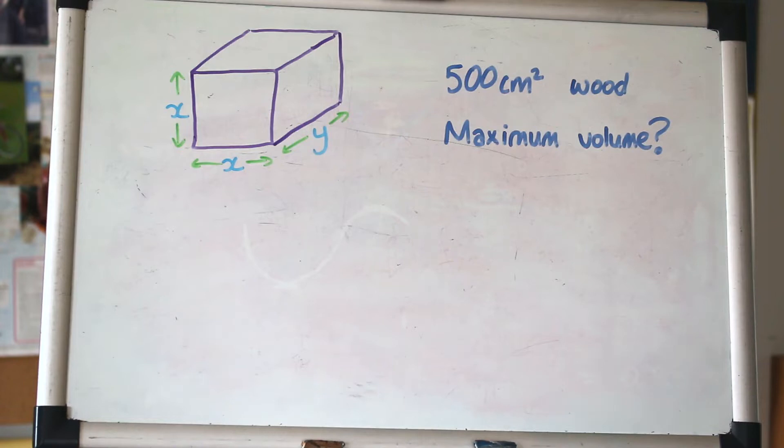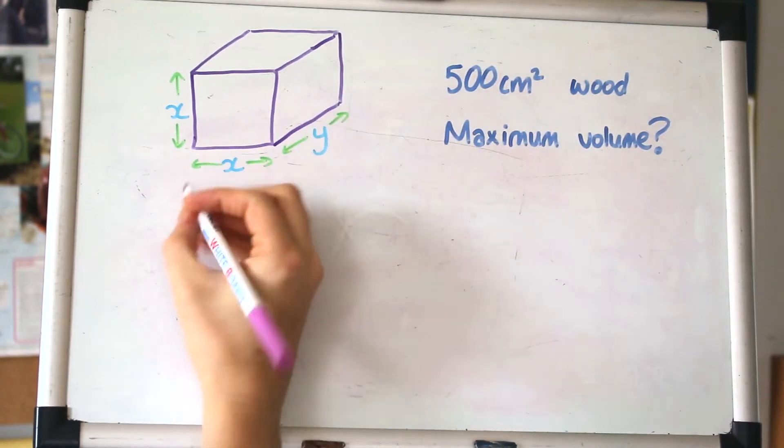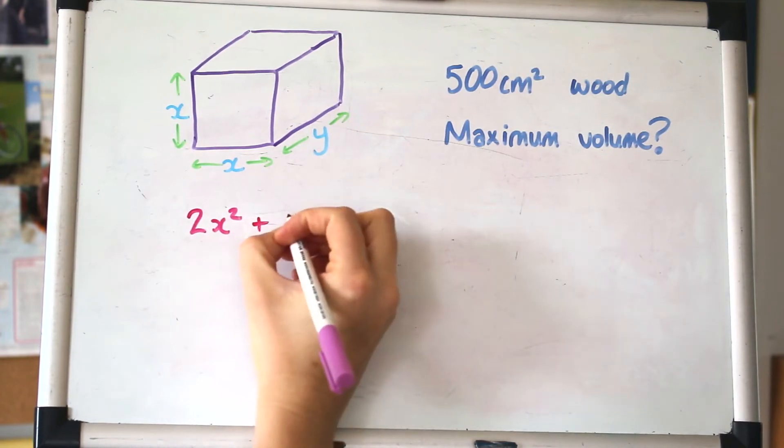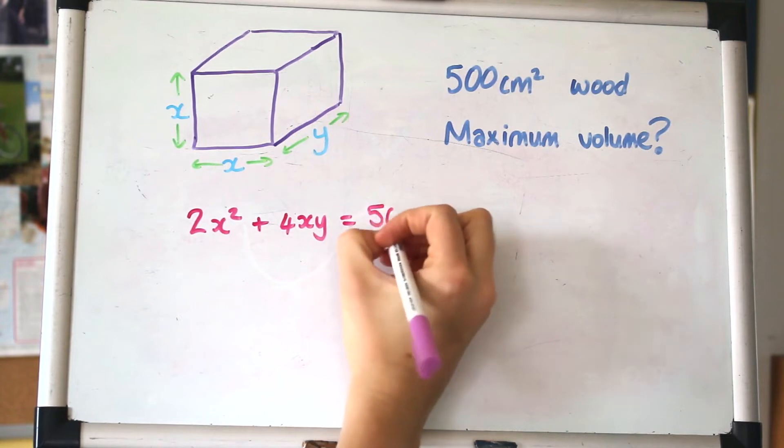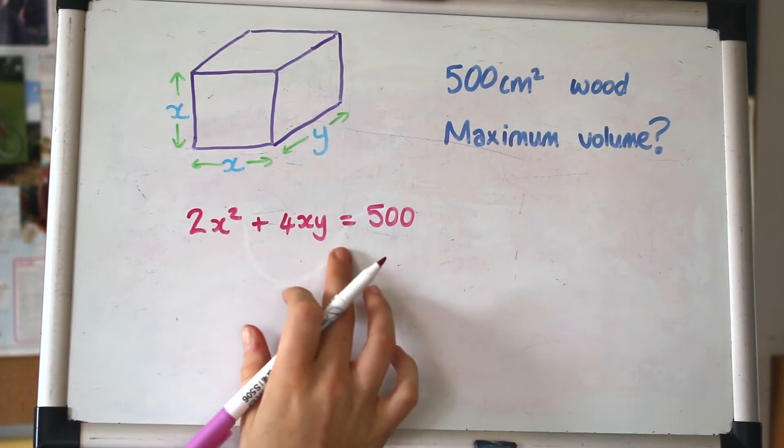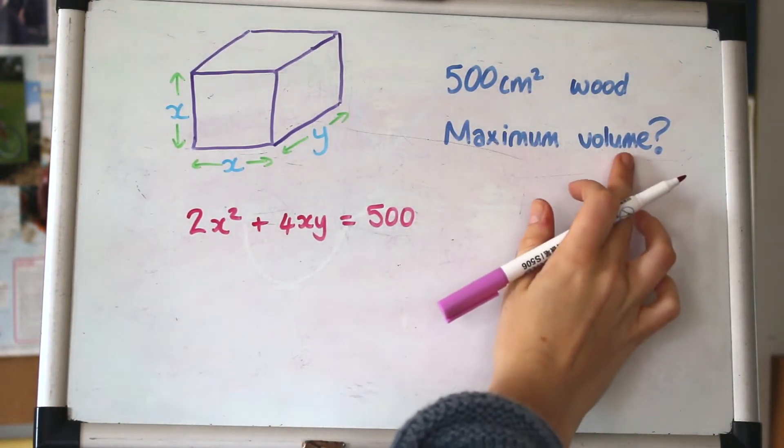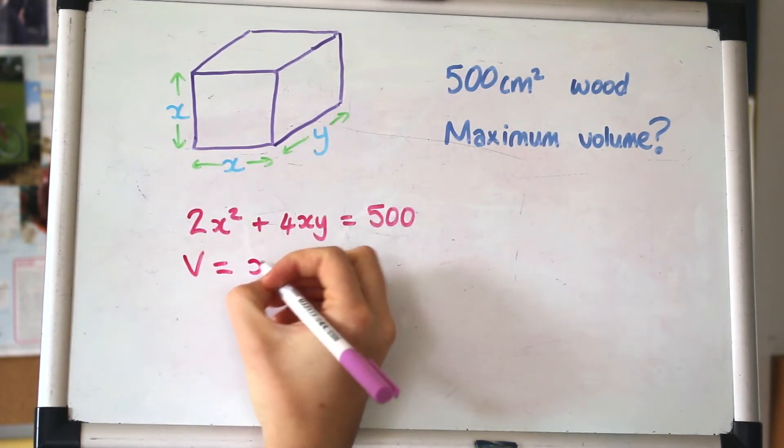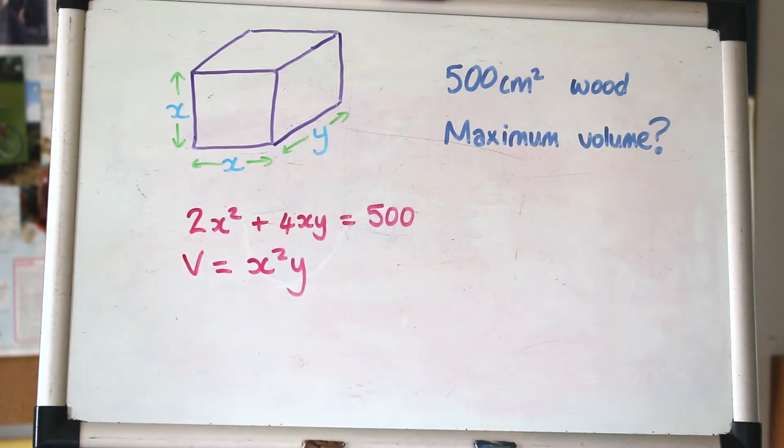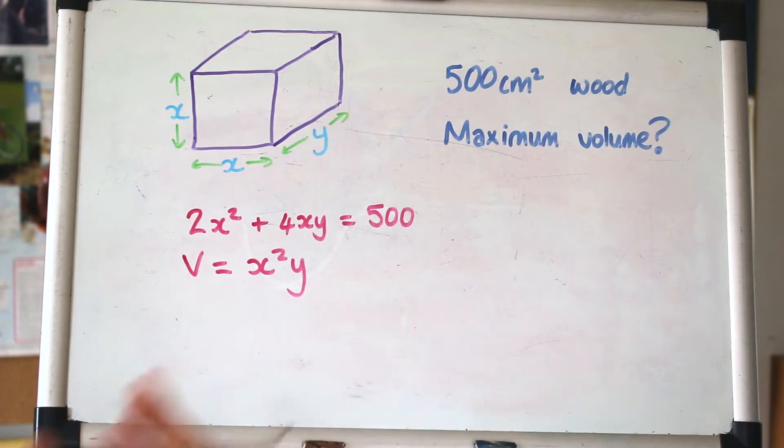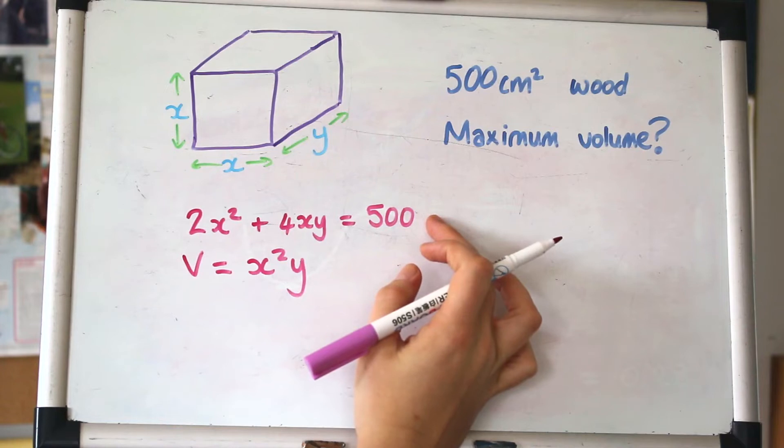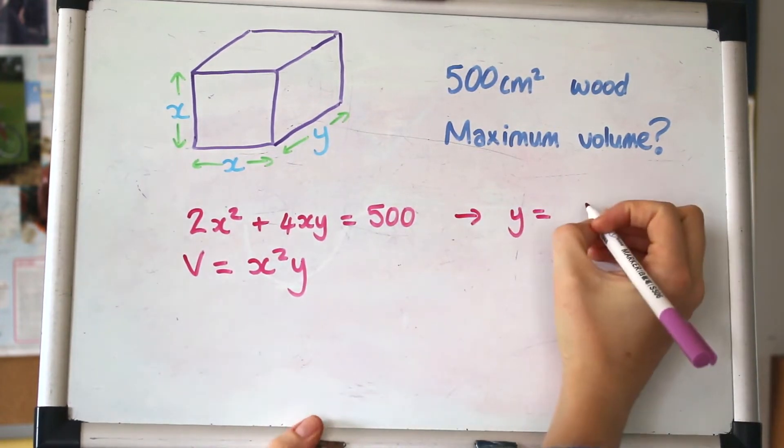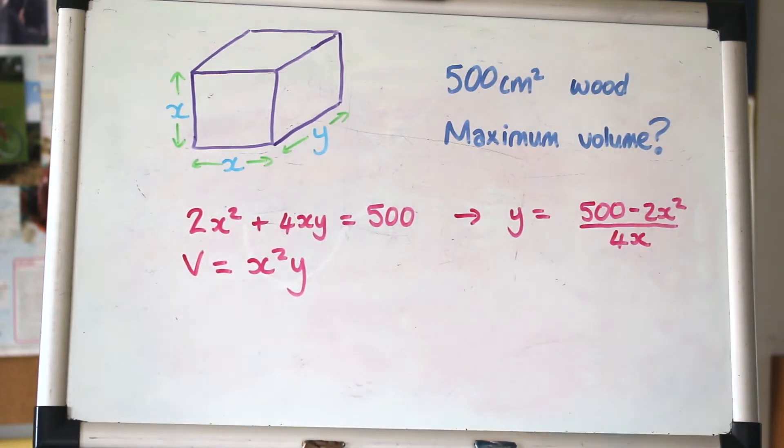When you take a graph of a function and differentiate it and set it equal to zero, you're finding where the gradient is zero, and that's always at these maximum and minimum points. We need to get some algebra going. We can set up an equation for the surface area: 2x² + 4xy = 500.